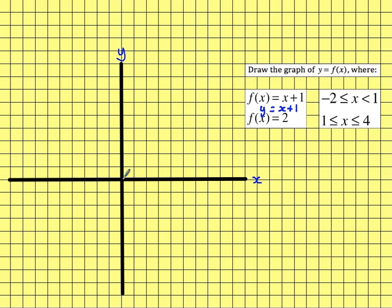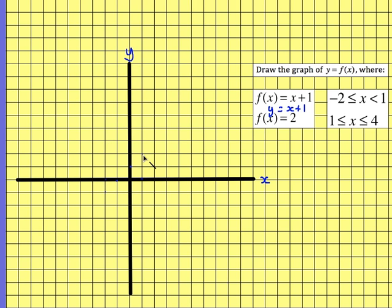So x values from minus 2 to 1. I'm going to draw the graph of y equals x plus 1. y equals x plus 1 is going to be a line with a gradient of 1 and a y-intercept of 1. So it must be coming down through those points there — join those up. So that's the first part done.